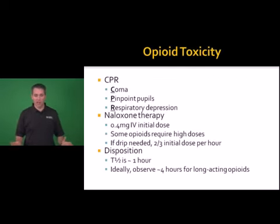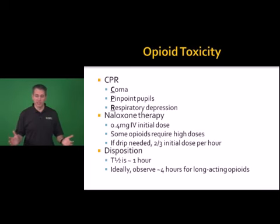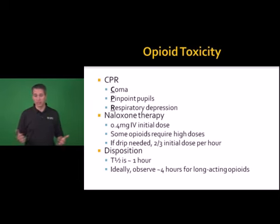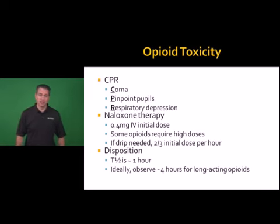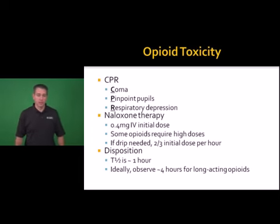Diving in with toxidromes, one of the most common is opioid toxicity. An important differentiation is opioid versus opiate. Opioids are any medications derived synthetically from a morphine derivative, whereas opiates like codeine and morphine are derived directly from poppy plants. Typical opioid toxicity can be remembered with the mnemonic CPR: coma, pinpoint pupils, and respiratory depression — the triad of severe opioid toxicity.